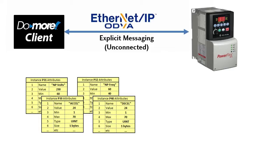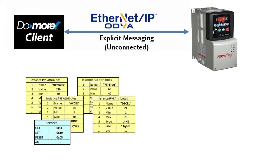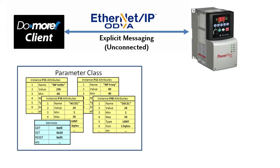Now what can you do with these attributes? You can get the value, set the value, reset the value, etc. We call those services — all the things you can do to this common set of objects. Since all these instances of this common template or object share a common set of attributes and services, we group them together into a common class of objects — we call this the parameter class.